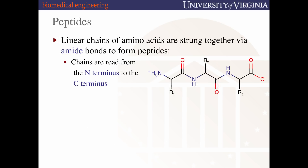Let's move into proteins. From the pre-lecture, you learned that peptides are linear chains of amino acids strung together through amide bonds — also called peptide bonds; these are the same thing. These bonds form between amino acids through a reaction between their amine group and their carboxylic acid group. When reading a peptide structure, you always read from the N-terminus to the C-terminus, like reading left to right. The N-terminus has a primary amine hanging off the end; the C-terminus is defined by the carboxylic acid on the other end.